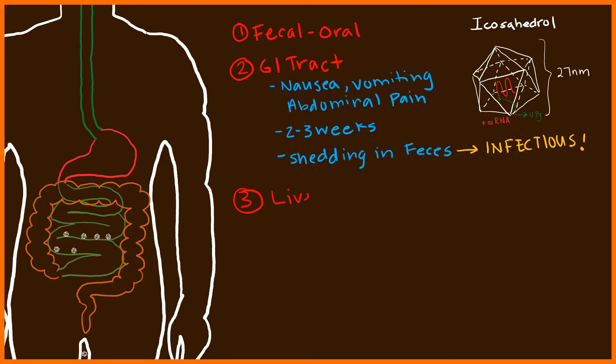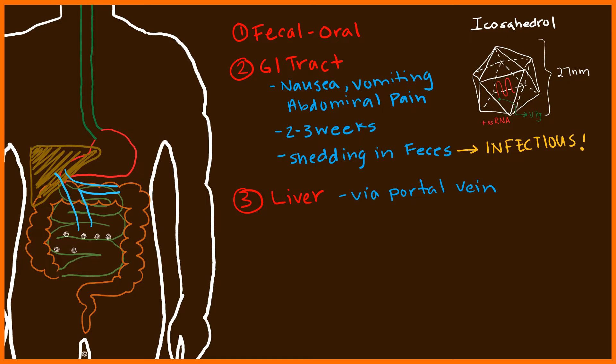After two to three weeks in the GI tract, the virus eventually makes its way to the liver. This is typically done via the portal tract — viral particles go from the intestine, break off, enter the portal vein, and land eventually into the liver. Once in the liver, the virus gains access into the cell by the alpha-2-macroglobulin receptor.